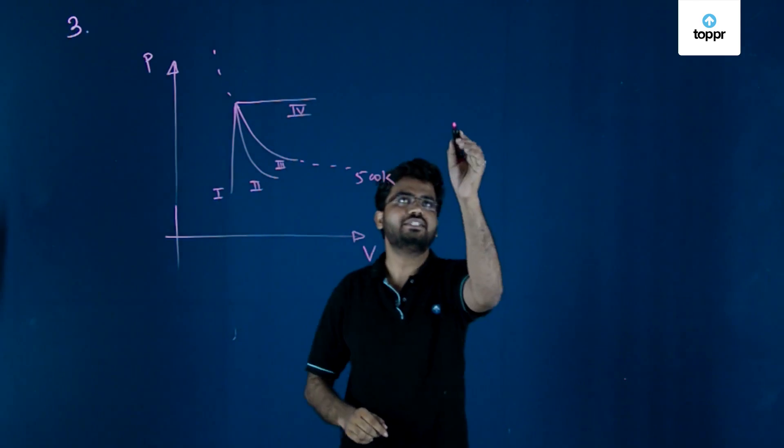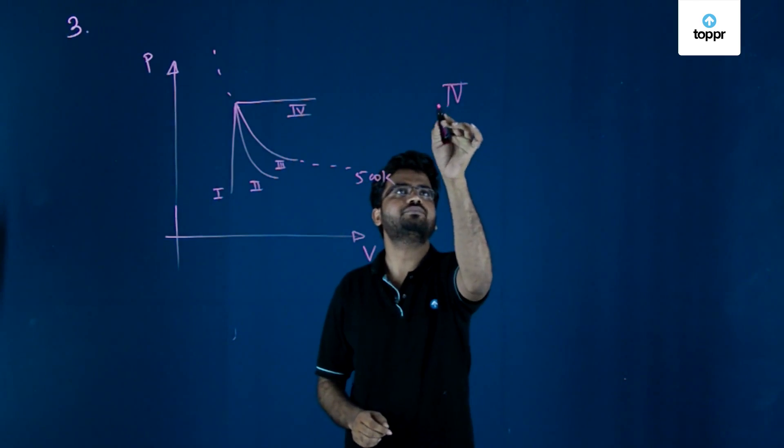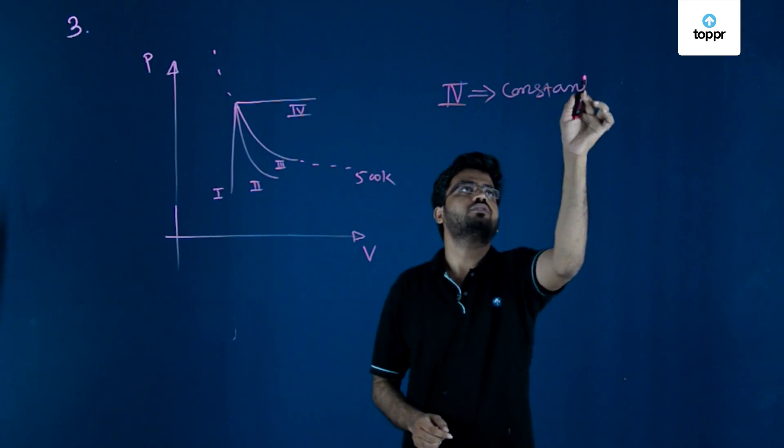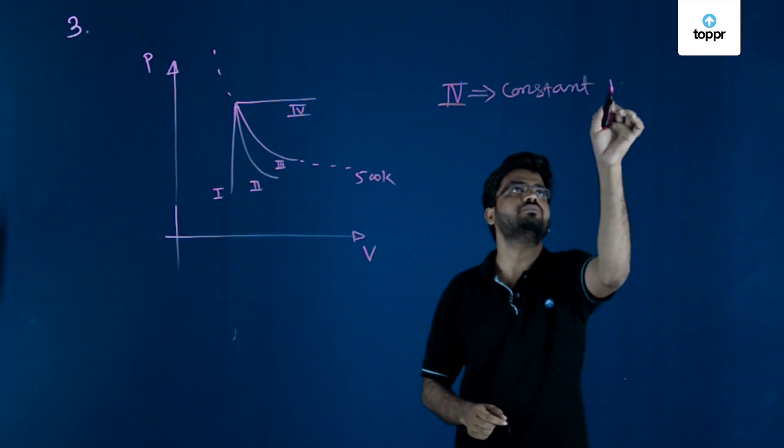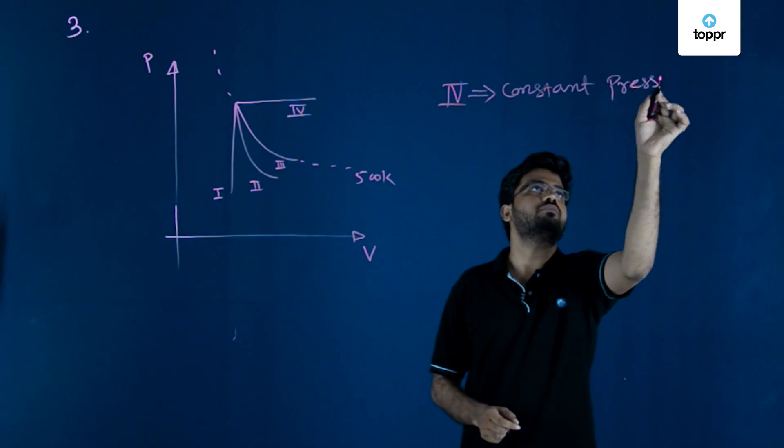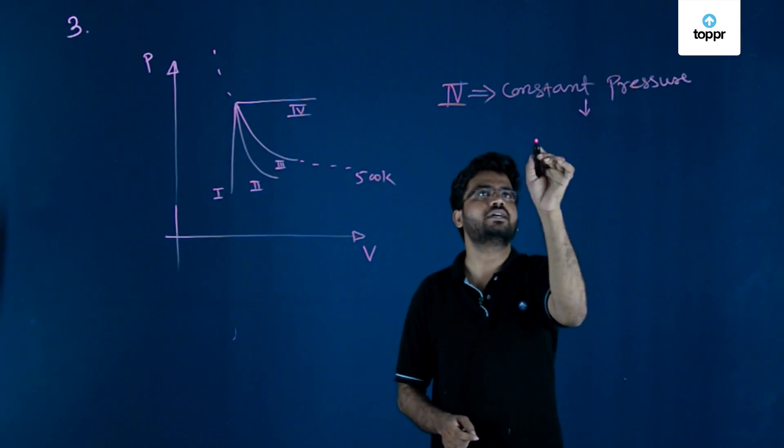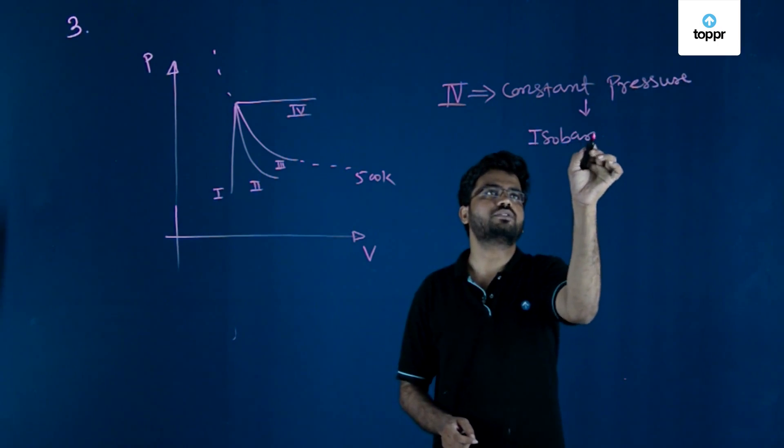So the fourth process, which has constant pressure, must be an isobaric process.